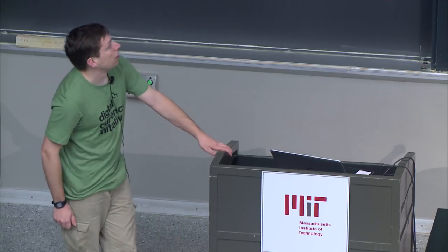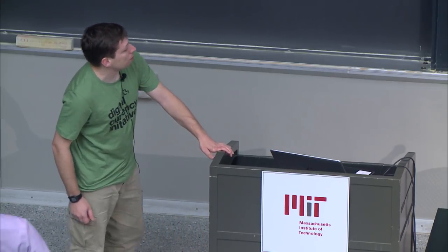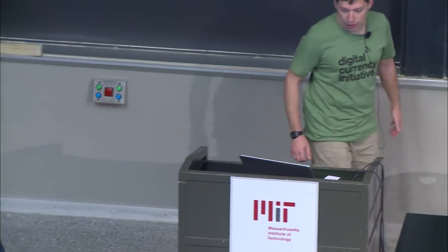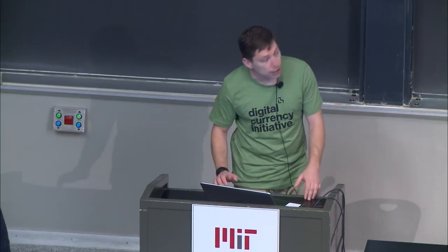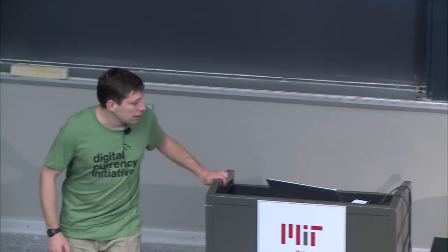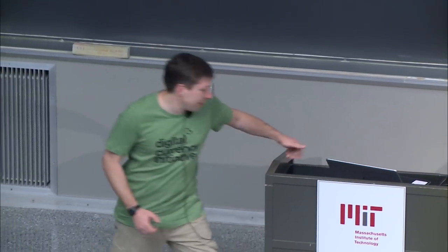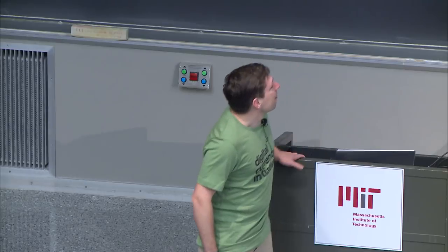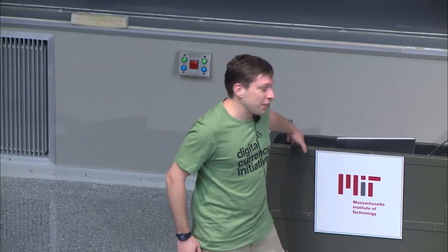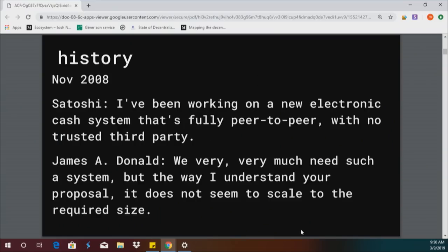Scalability has been a concern in Bitcoin for the whole time. In fact, the first thing anyone said about Bitcoin — so in 2008, Satoshi was like, hey, I made this thing called Bitcoin. And some guy on the mailing list was like, sounds like a great idea, but it doesn't scale to the required size.